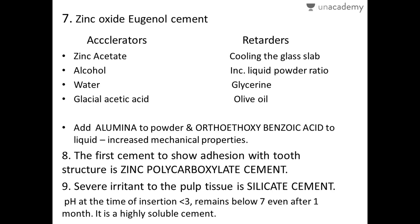Zinc oxide eugenol cement can be accelerated in its setting reaction by adding zinc acetate, alcohol, water, or glacial acetic acid — accelerating the reaction means its working time as well as setting time is decreased. To retard the reaction, meaning we need more working and setting time, we can cool the glass slab, increase the liquid-to-powder ratio, or add glycerin or olive oil.